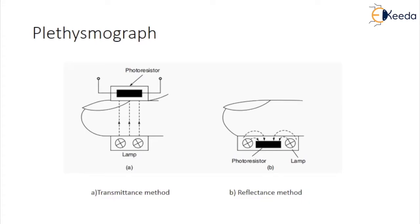Methods used for the detection of volume changes due to blood flow are electrical impedance changes, strain gauge or microphone, and optical changes.